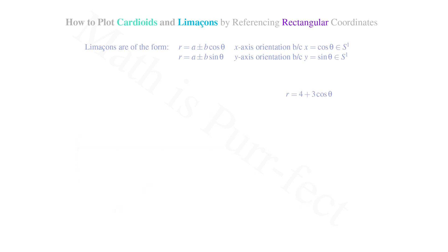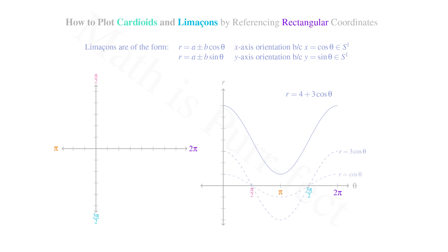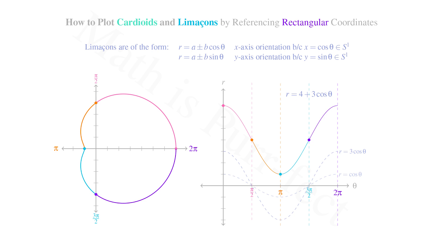Our last example will be the limaçon r = 4 + 3cos(θ), which from the equation we know will orient along the positive x-axis. Beginning with the graph of cosine, we multiply through by 3, stretching the graph vertically by a factor of 3, then add 4, shifting the graph vertically 4 units upwards. In polar form, we begin with a radius of 7 at θ = 0, then decrease to 4 by θ = π/2. In quadrant 2 our radius further decreases to 1 at θ = π. In quadrant 3 it increases back to 4 at θ = 3π/2, and finally in quadrant 4 our radius increases to 7, completing the cycle. Note how this graph is indeed oriented on the positive x-axis, and how this type of limaçon is more akin to a dimpled circle in shape.